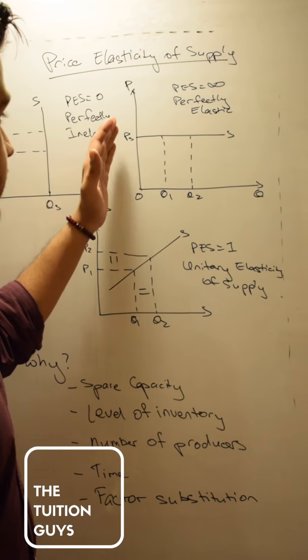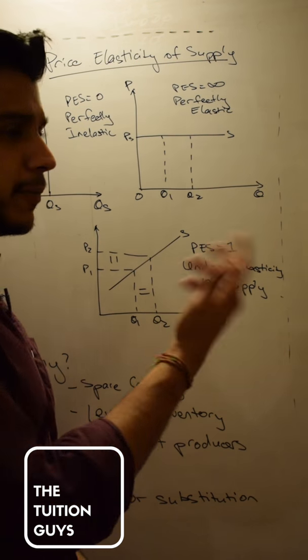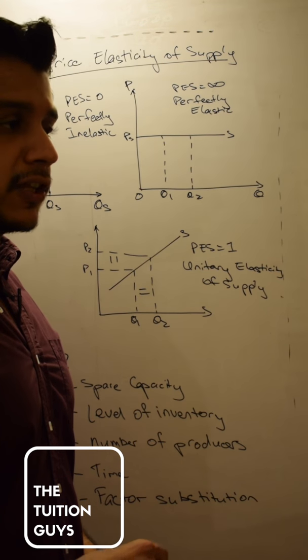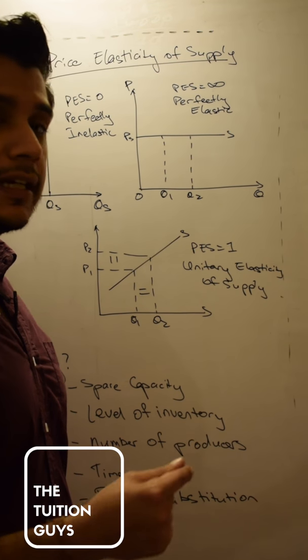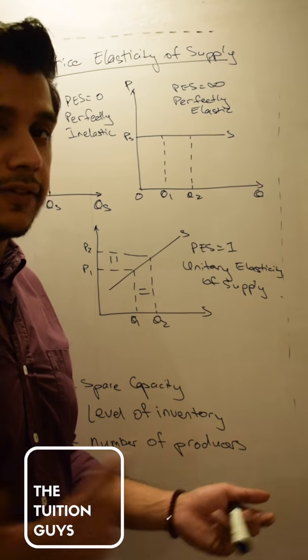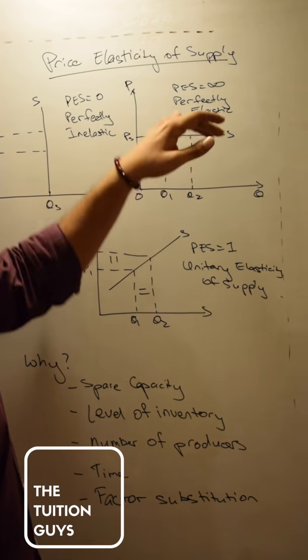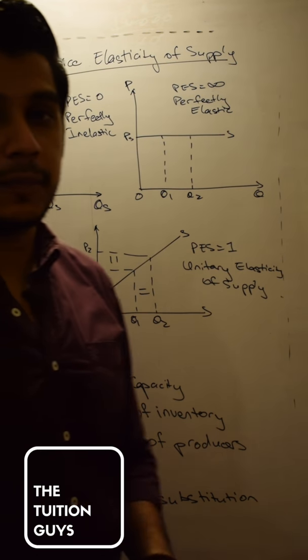If supply is perfectly elastic, that means that regardless of whatever quantity, at that same price, the price will stay fixed. The producer can quickly add more if they need, or they can quickly reduce the supply if they need. Adding supply is no issue at that current price, and therefore PES will be infinity.